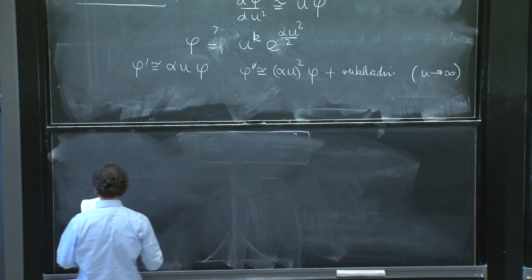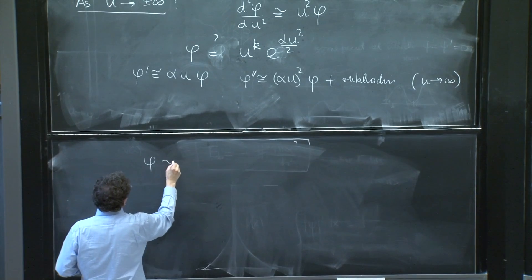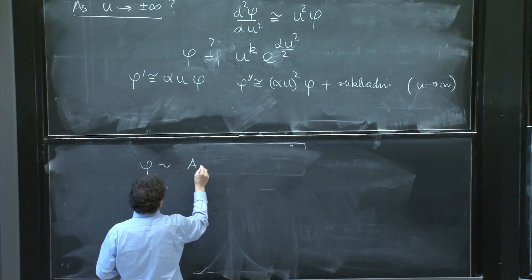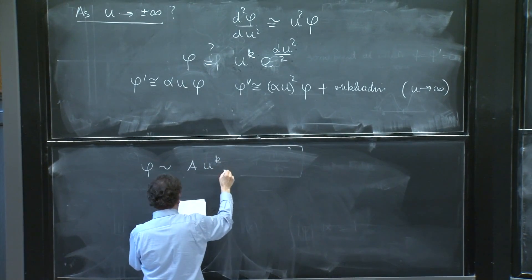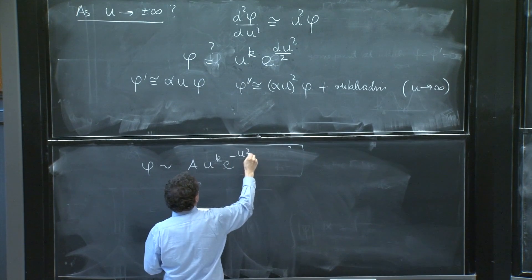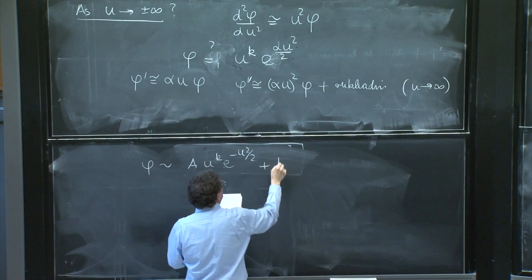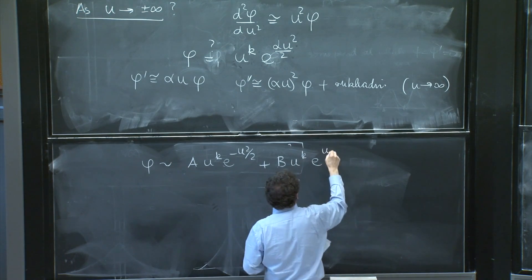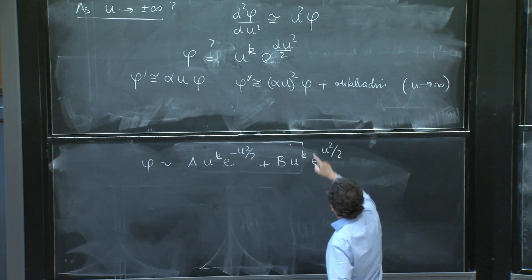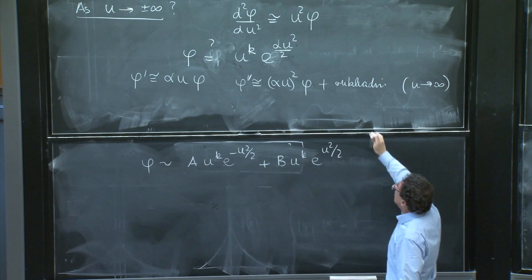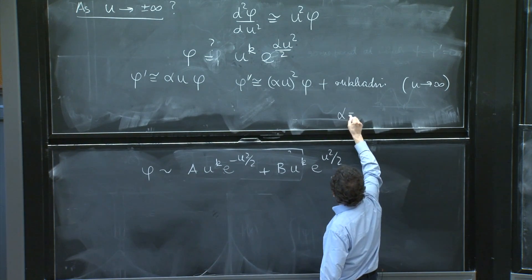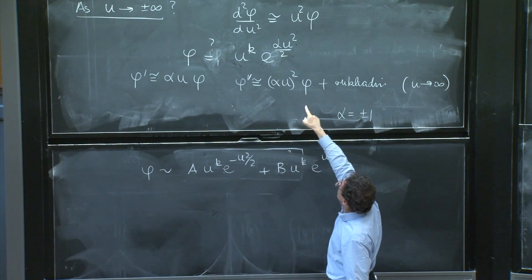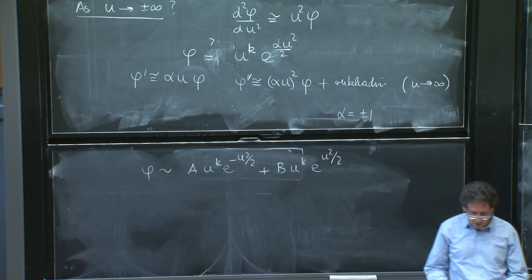So also, as u goes to infinity, we would expect maybe solutions of the form a u to the k e to the minus u squared over 2 plus b u to the k e to the u squared over 2. The two values of alpha. Alpha equal plus minus 1 are the possibilities for these two equations to match.